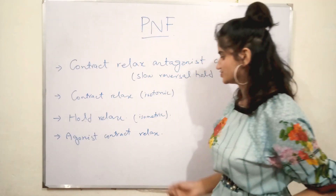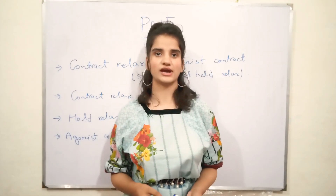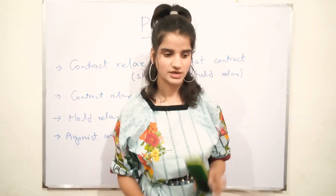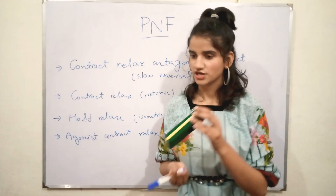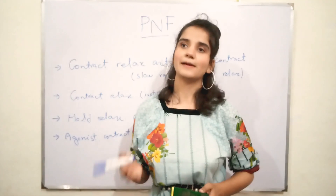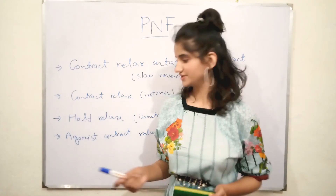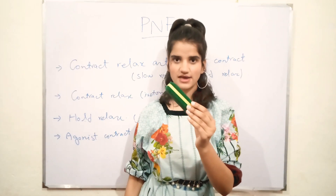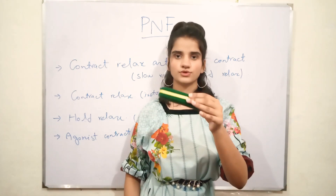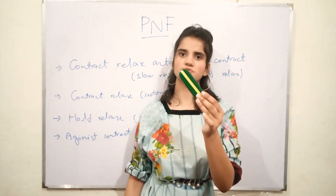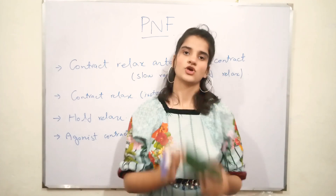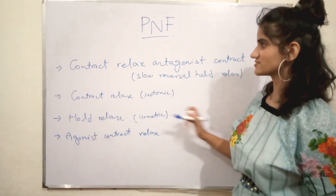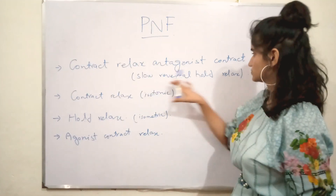Moving to the last technique — agonist contract-relax: in all the previous three techniques, the physiotherapist applied a passive stretch to the muscle. But in agonist contract-relax, the patient performs an active stretch. For example, the patient actively performs a straight leg raise to stretch the hamstring. When the patient reaches the maximum range of motion, the physiotherapist maintains that position. The other name for contract-relax and agonist contract is slow reversal hold-relax.